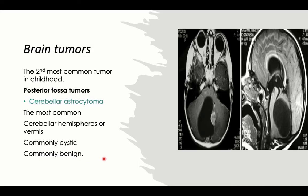Brain tumors are the second most common tumors in childhood after leukemia. Brain tumors can occur in the posterior fossa commonly, or can be supratentorial. Astrocytoma is a histological diagnosis and is the most common brain tumor; in the posterior fossa, the most common tumor is astrocytoma, especially cerebellar astrocytoma.